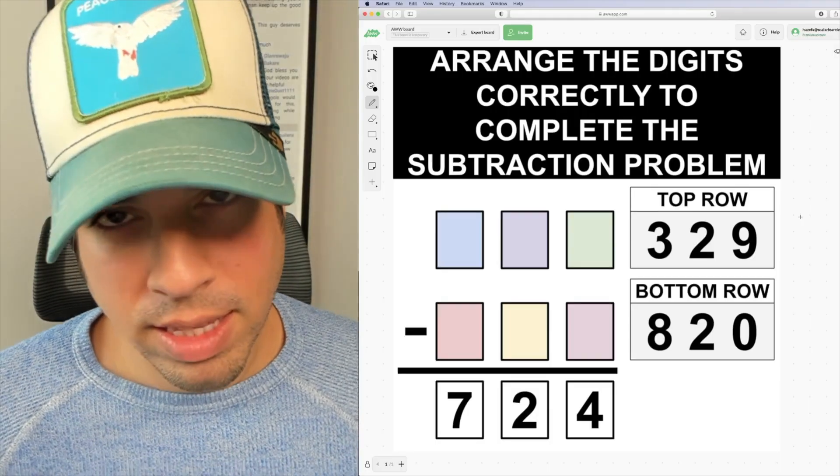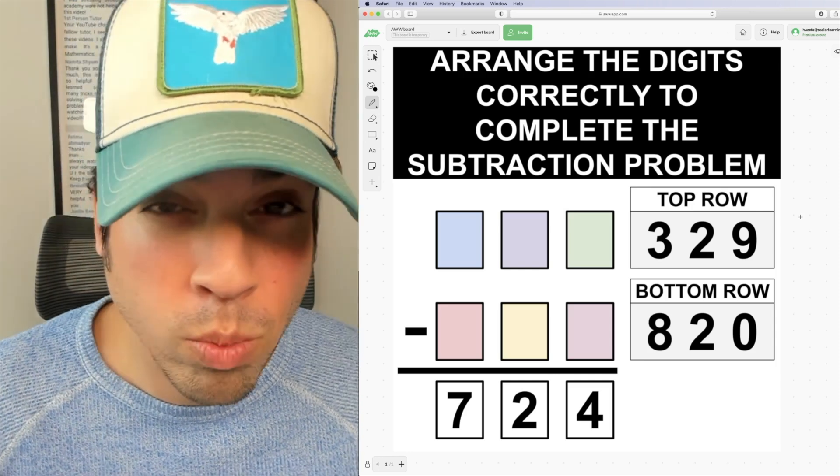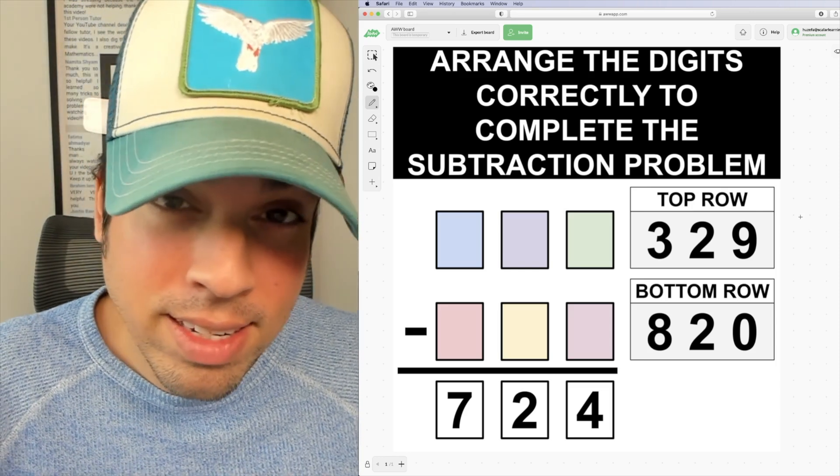So normally in a problem like this, I would encourage you strategically to start from right to left. So we're starting with the ones place and then we're moving to the tens and the hundreds.